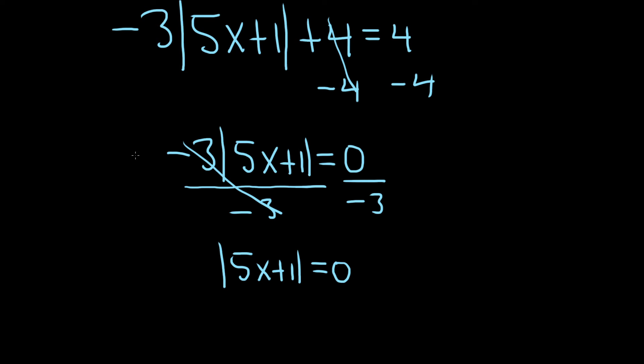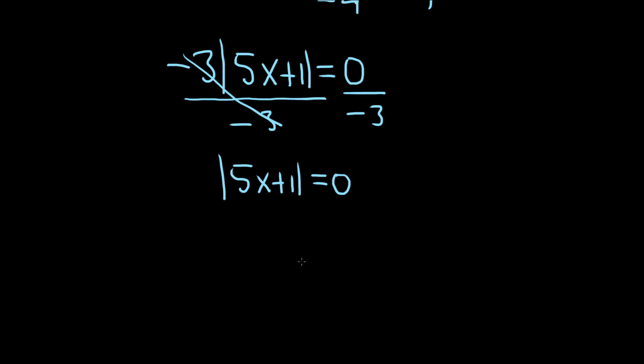The rule is whenever you have an absolute value equal to something else, you can just drop the absolute value and put a plus or minus, as long as that something else isn't negative. This isn't negative, so we're okay.